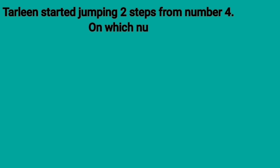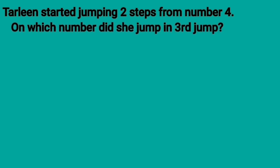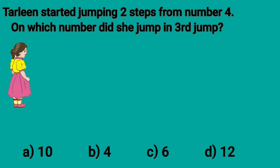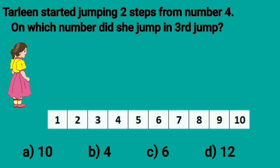Here is the first question. Tarleen started jumping two steps from number 4. On which number did she jump in third jump? Let's use a number strip here. From which number did Tarleen start? Yes, she started jumping from 4.